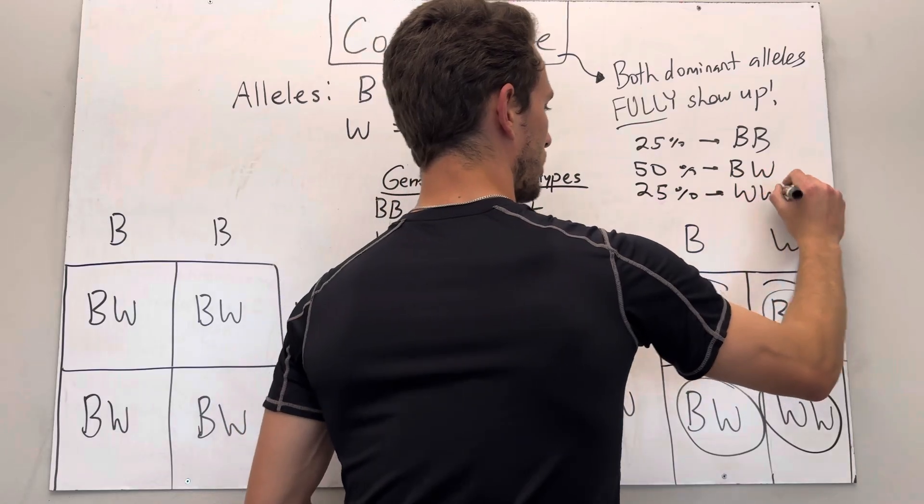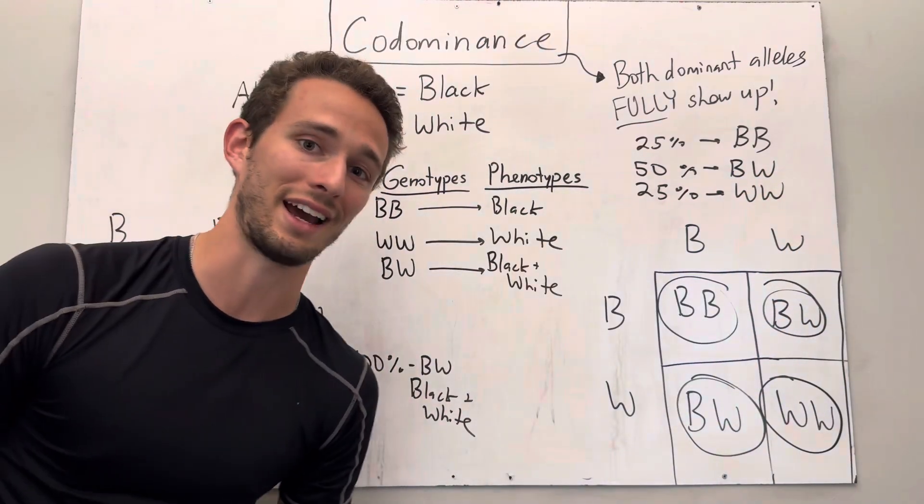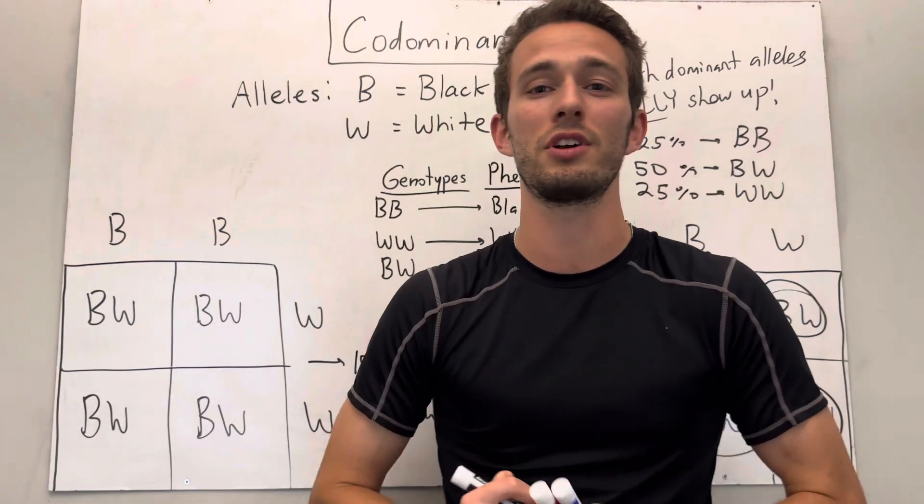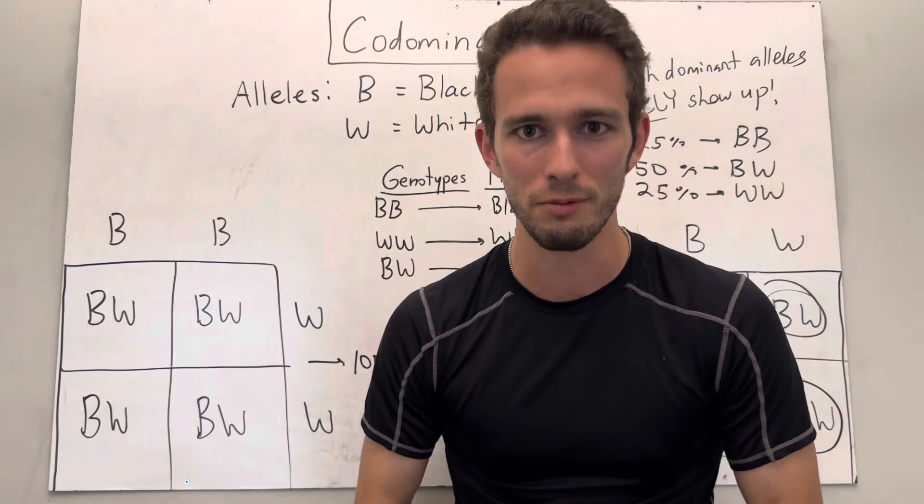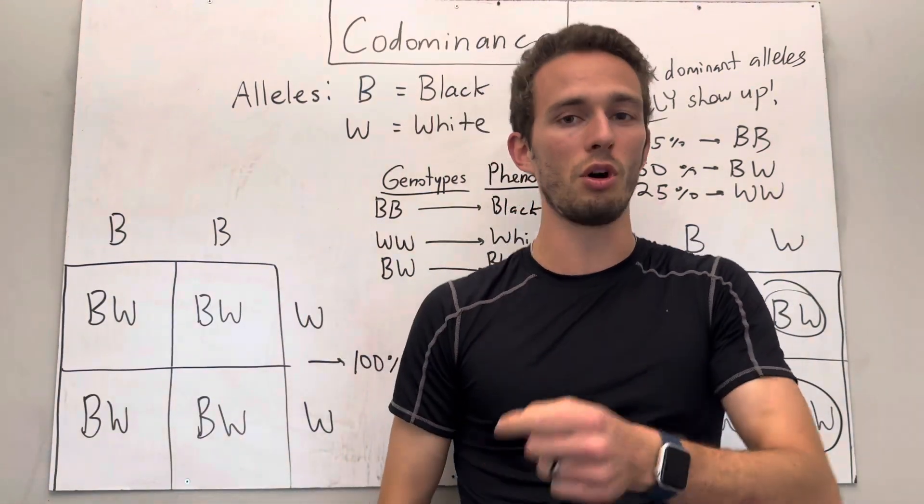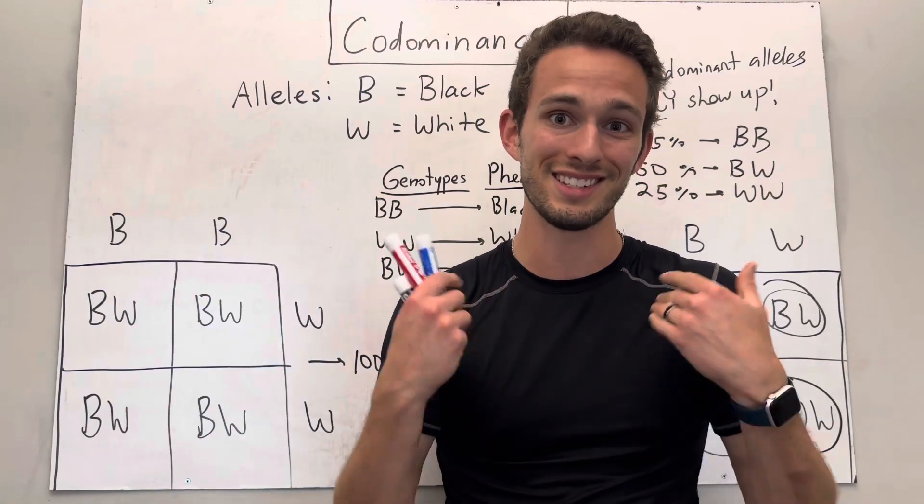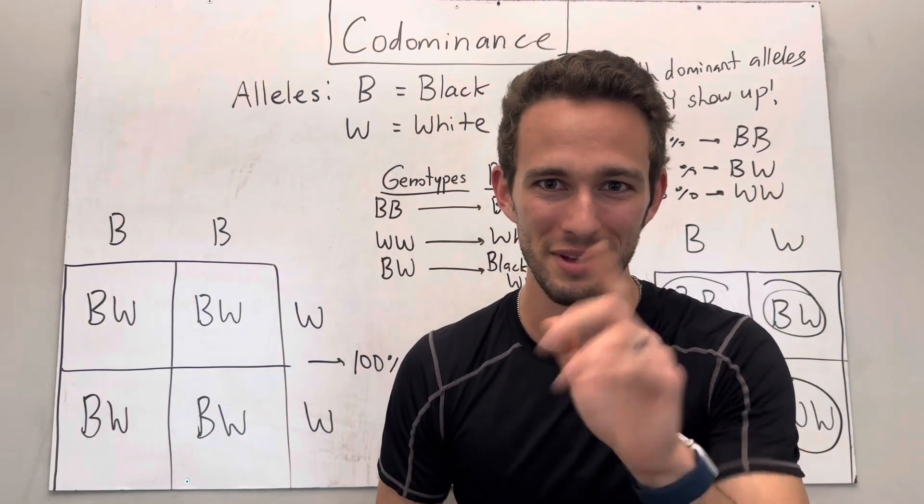So this is just a very simple example of co-dominance in the fur colors of cats. Hopefully this was helpful. Continue watching through so you know all of the variations of different Punnett squares and inheritance types. Be sure to like and subscribe. Thank you for watching.